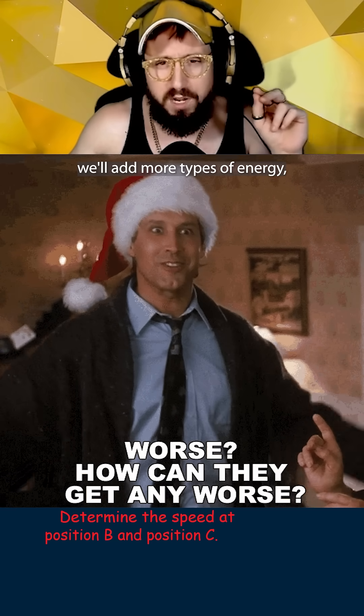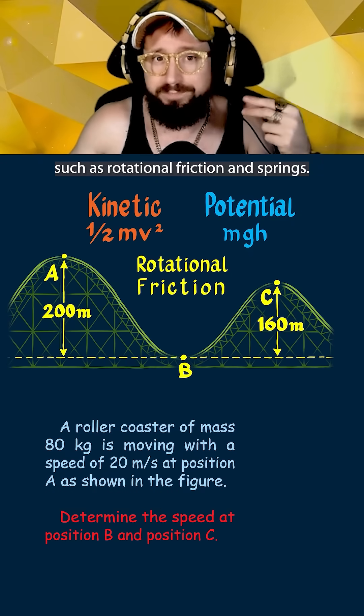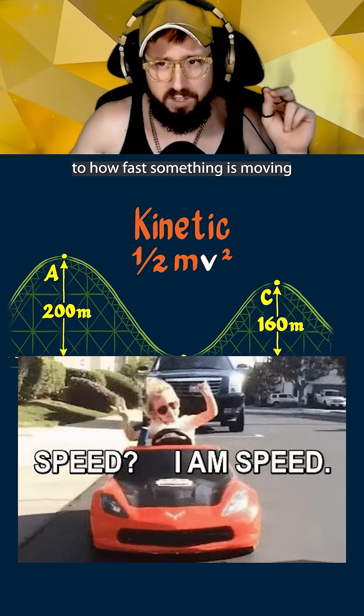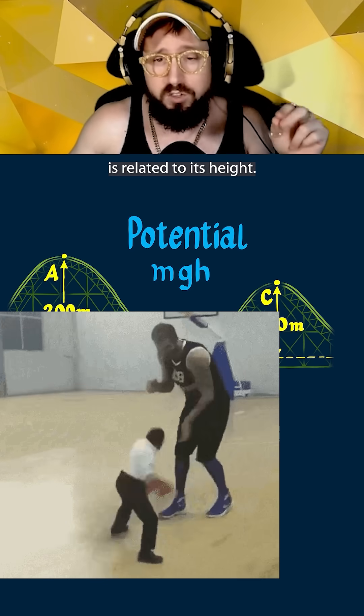In later examples we'll add more types of energy such as rotational, friction, and springs. But for now kinetic energy can be thought of as the energy related to how fast something is moving and potential energy is related to its height.